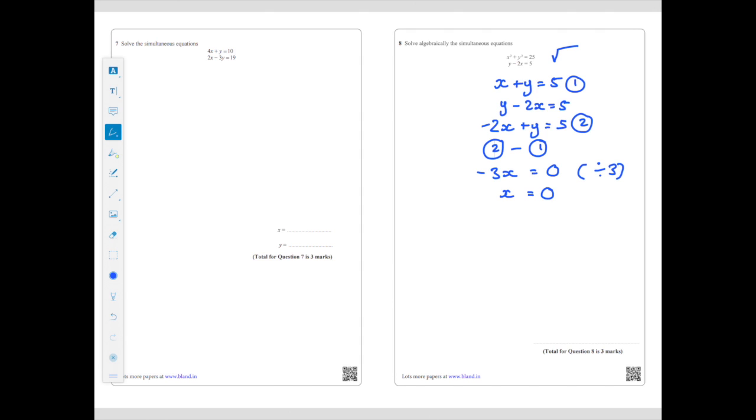So now I'm going to substitute in X equals 0 into Y minus 2X equals 5. So Y minus 2 lots of 0 equals 5. Y minus 2X is 0, so Y equals 5.